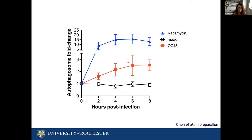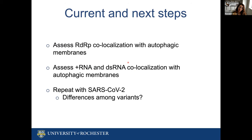One way to answer this question — and I apologize because these experiments are ongoing this week and I don't have the data yet — is to see if the replication machinery of the virus co-localizes with these autophagic structures: the RNA-dependent RNA polymerase, the novel copies of genomic RNA, and byproducts of replication like double-stranded RNA. The next thing we need to do is repeat these experiments with SARS-CoV-2 — we now have the biosafety clearance and the virus stock, so we are ready to go. One question we are very interested in is whether we see differences among different variants of SARS-CoV-2, particularly highly transmissible ones like the UK variant and the South African variant.